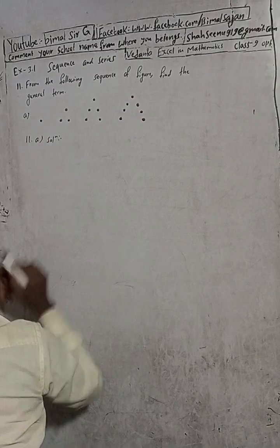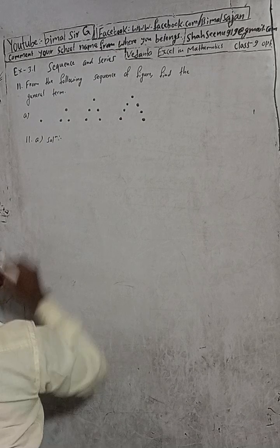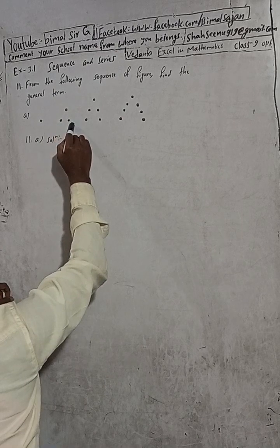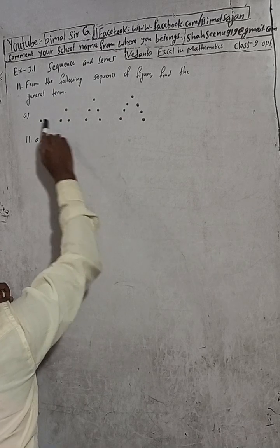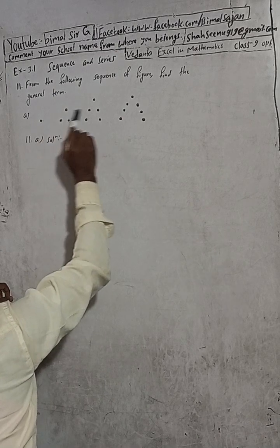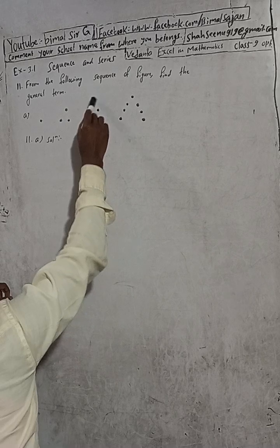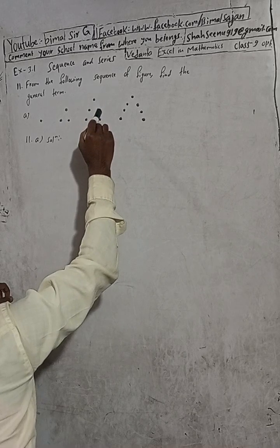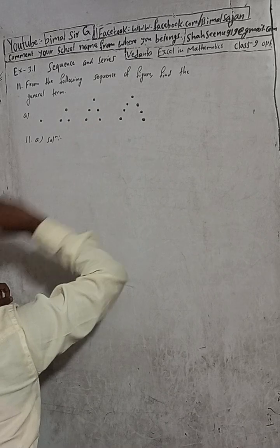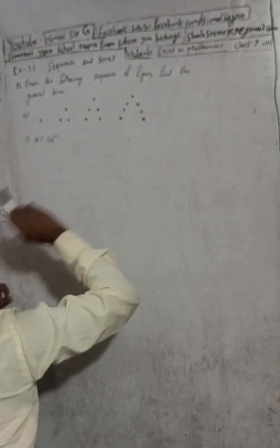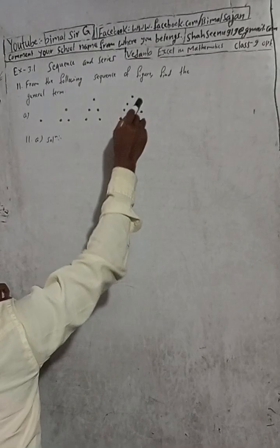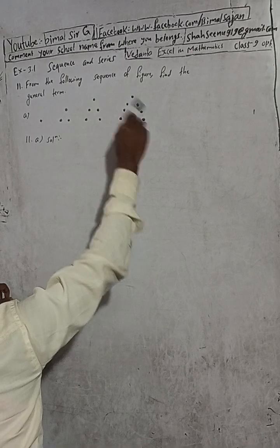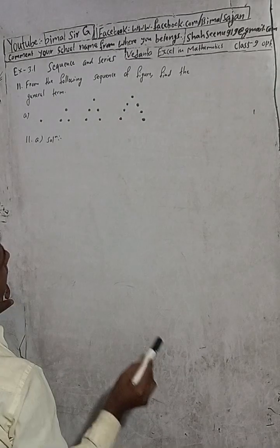Here in the first figure there is 1 dot. After that there is 1 and then 2, that means 1, 2. And then after that 1, 2, 3. Then 1, 2, 3, 4. Like this you can see there.